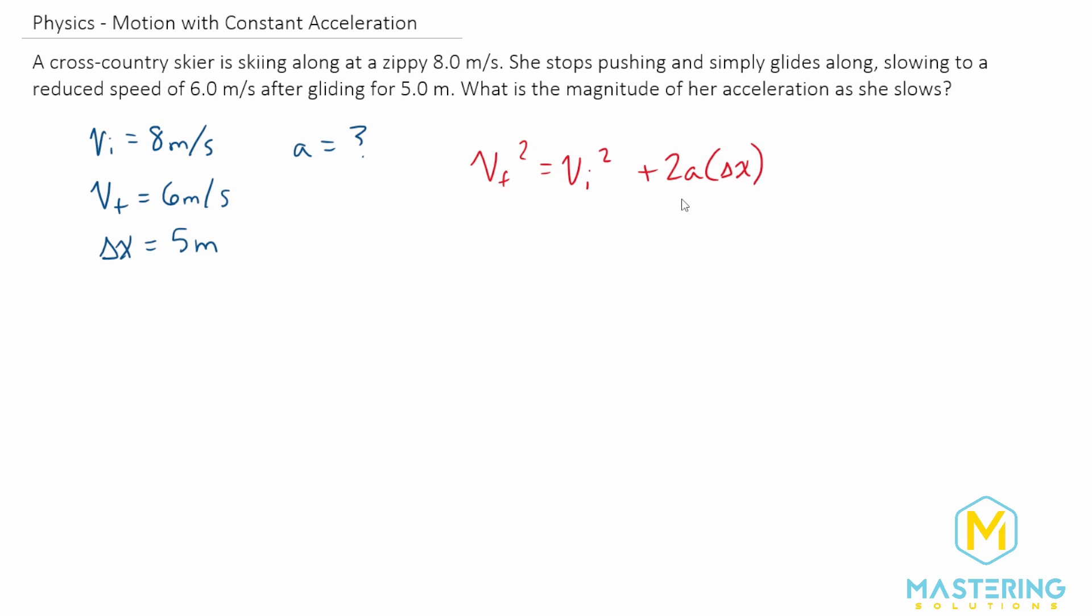So now we want to isolate this equation for acceleration. So we'll move the velocity over. So we have v final squared minus v initial squared is equal to 2 times acceleration times delta x. And we want to isolate acceleration. So we'll divide both sides by 2 delta x.